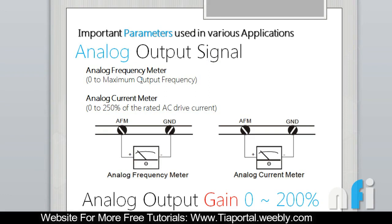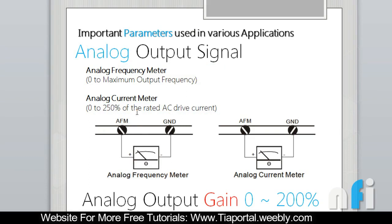You also have feedback based on current. In this mode you have 0 to 200 percent of the rated current of the drive. Based on the current you can read that feedback in your PLC, your HMI, or you can use a voltage display meter. Now in this video we are going to synchronize one drive based on the feedback from another drive.